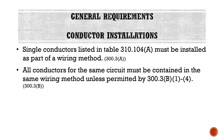All conductors for the same circuit must be contained in the same wiring method, unless permitted by 300.3B1 through 4. For example, a typical 120-volt circuit with a current-carrying conductor, a grounded or neutral conductor, and an equipment grounding conductor — a black, white, and green wire — all three must be in that same wiring method. If we're using NM cable, we can't run two pieces and split the conductors across them for one circuit. The same applies to conduit — they all have to be in the same conduit.